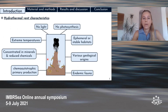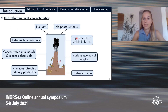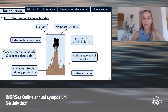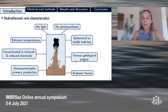Vent systems are characterized by extreme temperatures, the absence of light, and therefore of photosynthesis activity. They can be ephemeral or stable habitats depending on their geological origins. For example, back-arc basin vents undergo lower natural changes and a lower frequency of natural disturbance than mid-ocean ridge systems, meaning that back-arc basin communities could be less resilient to high natural variability and to anthropogenic disturbances.